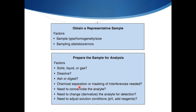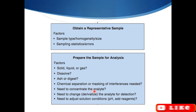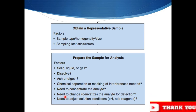Chemical separation or removal of interferences is sometimes needed. Some samples require separation of components, for which we can use chromatographic techniques. We can then perform qualitative or quantitative analysis. Sometimes we need to concentrate the analyte — for example, using evaporation to get the sample in concentrated form — and sometimes we need to dilute it.